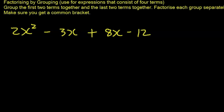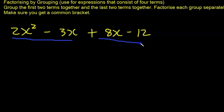Now we want to look at a different type of factorizing. In this situation, notice we have four terms — one, two, three, four. When we have these unique cases, we do what we call factorizing by grouping. We group the first two terms and the last two terms, and we factorize each group separately.